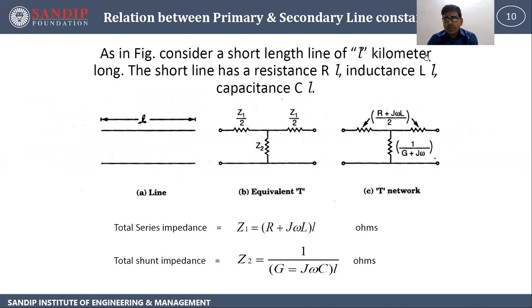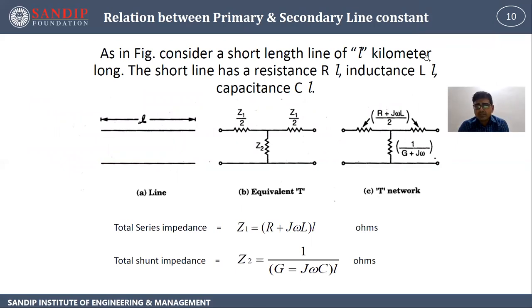Relationship between primary and secondary line constants: consider a short length line of l kilometers long. The short line has resistance Rl, inductance L·l, and capacitance C·l. This is its equivalent T-structure. Total series impedance Z₁ = (R + jωL)·l and total shunt impedance Z₂ = 1/(G + jωC)·l.